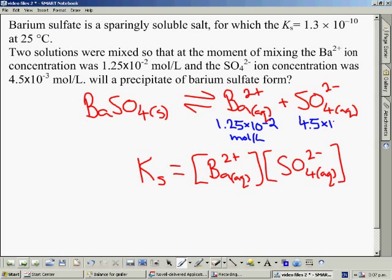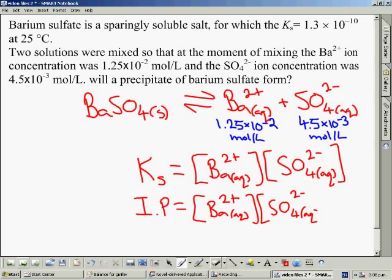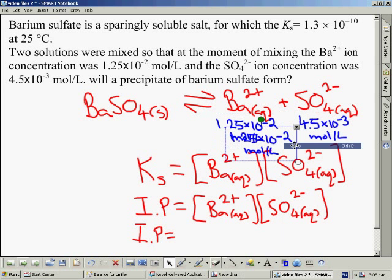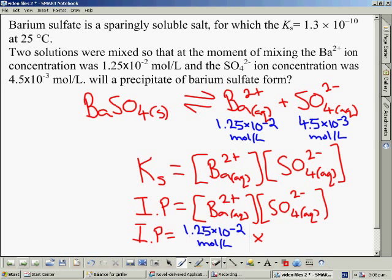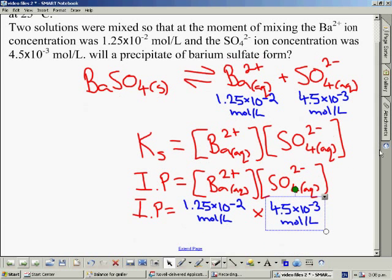The two ion concentrations are given to us. We're told once they are mixed, those are the concentrations. So we can just put those concentrations directly into the IP expression, which is of course the same as a KS expression. If we solve for the IP value, we should find that the IP in this case is going to be equal to 5.63 times 10 to negative 5.